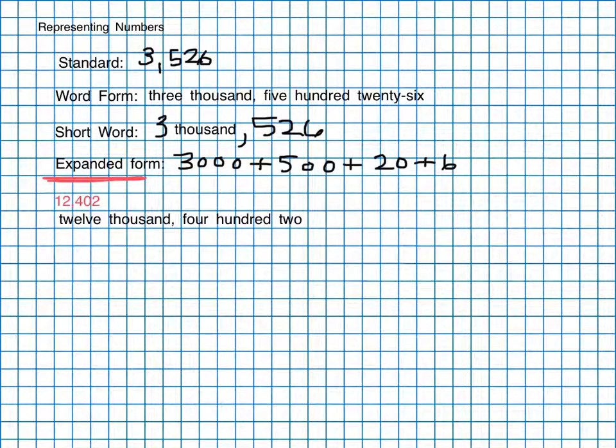And expanded form is going to look like ten thousand plus two thousand plus four hundred plus two. And that is what that looks like in the three regular forms.